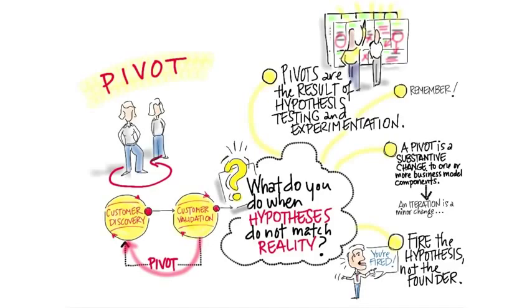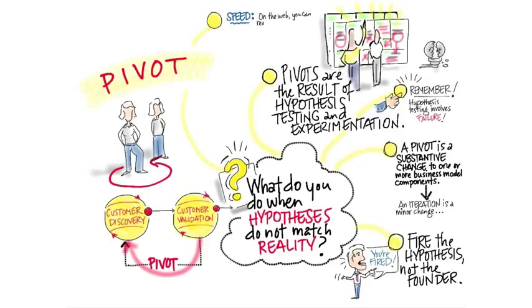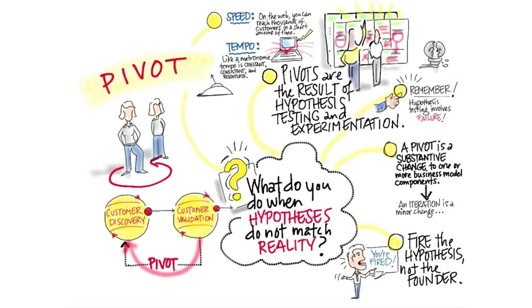The key idea here is a pivot allows you to get out and make changes. Typically only the founders could do pivots, but it's actually the heart of what makes customer development radically different than what's come before. You want to keep pivots at a constant speed and a constant tempo, with your entire company operating with speed and tempo and decision-making just like a metronome — constant, consistent, and relentless.